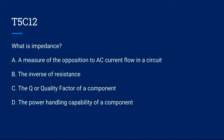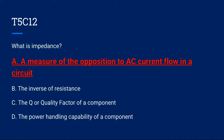T5C12: What is impedance? A. A measure of the opposition to AC current flow in a circuit, B. The inverse of resistance, C. The Q or quality factor of a component, or D. The power handling capability of a component. Correct answer is A. A measure of the opposition to AC current flow in the circuit.